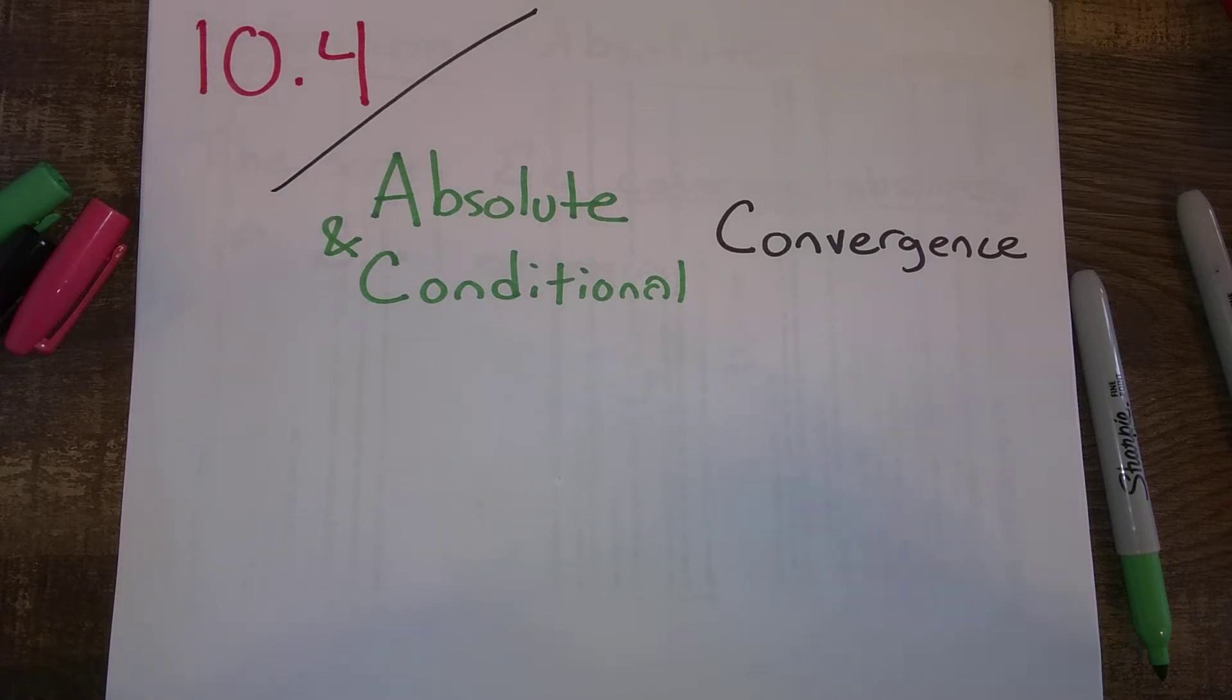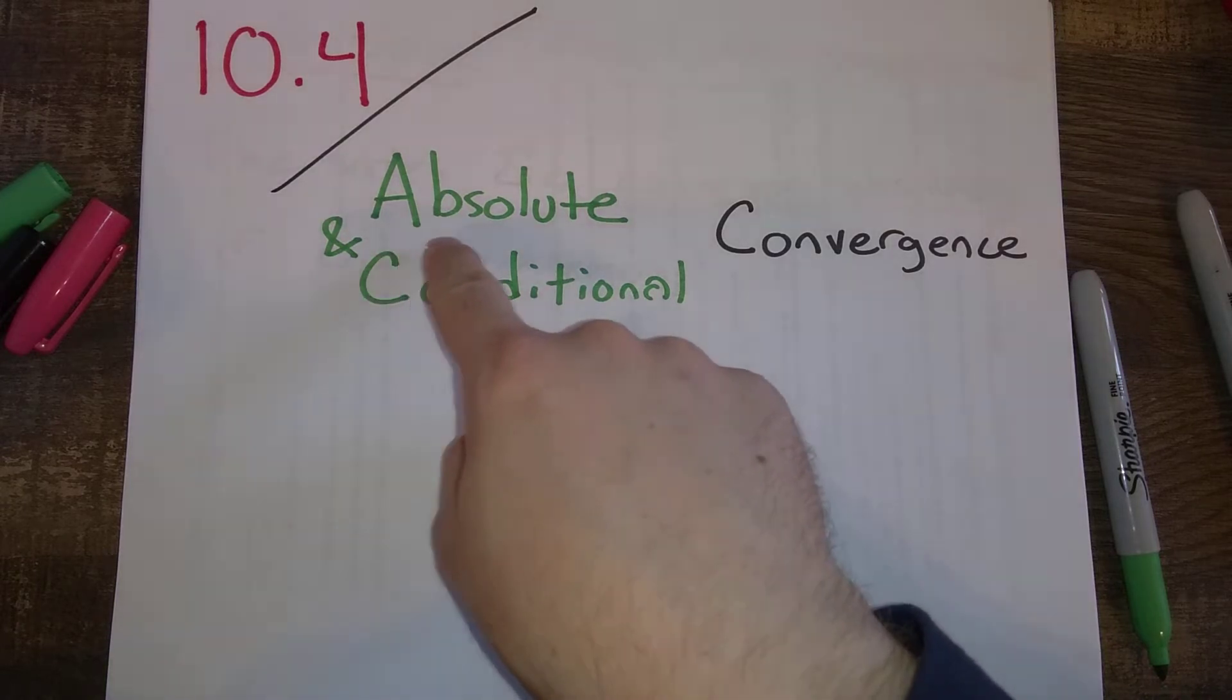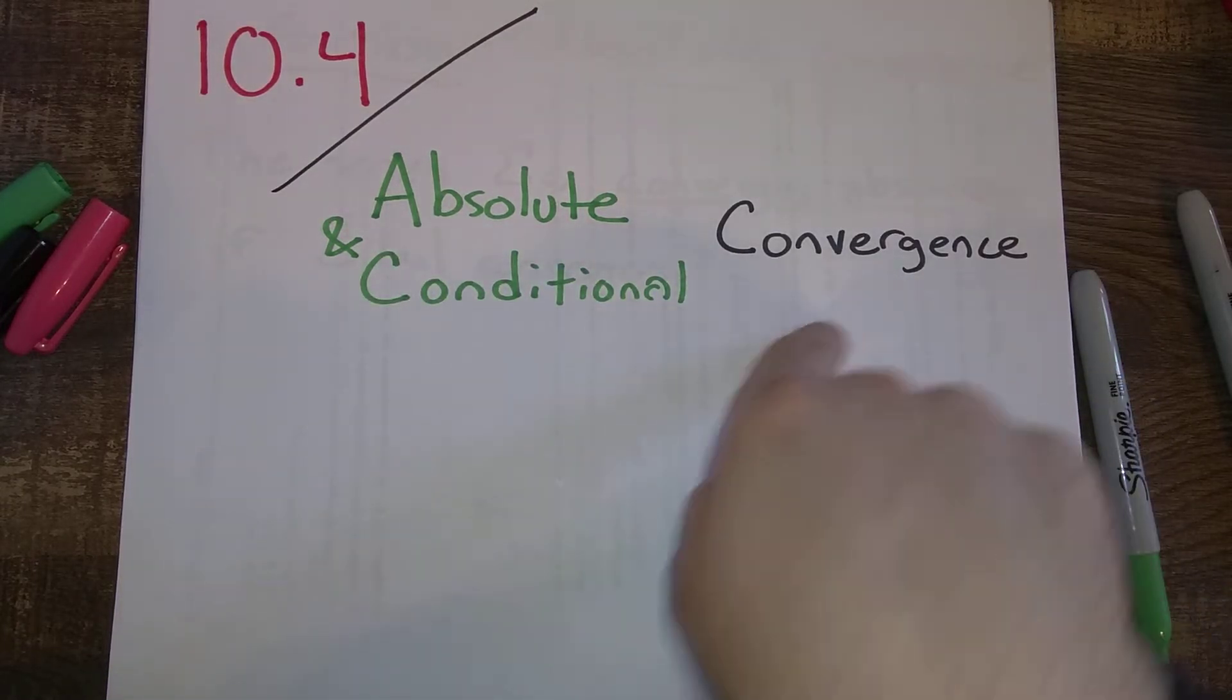In addition, we're going to differentiate between two different kinds of convergence. So we're going to differentiate between two terms: absolute convergence and conditional convergence.